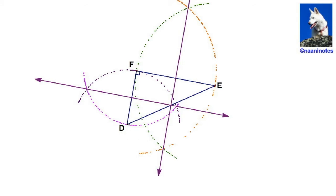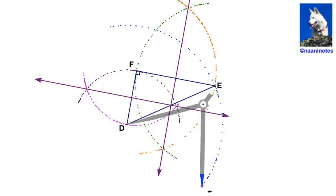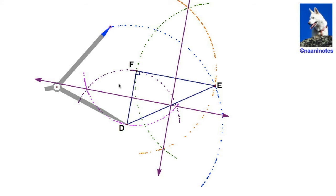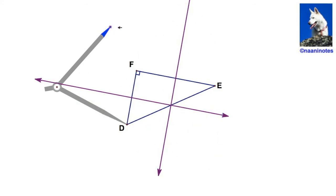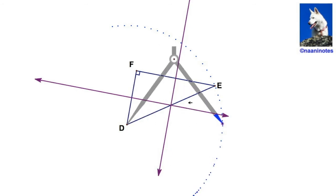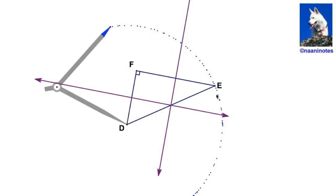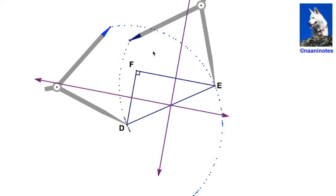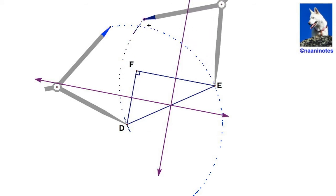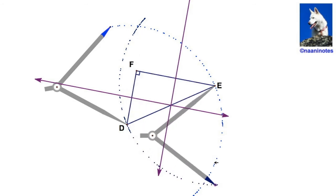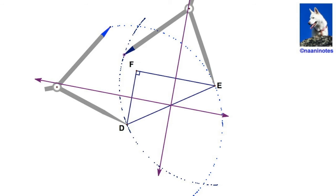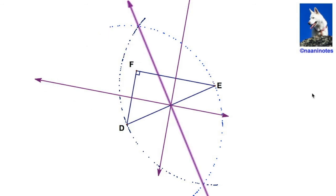This time we're going to construct DE. Gap the compass, give it a big swing — it's a big side. Clean up the drawing a little. Then put the needle on E, gap it back to D, generating an intersection up there and one down here. And there is the third perpendicular bisector.